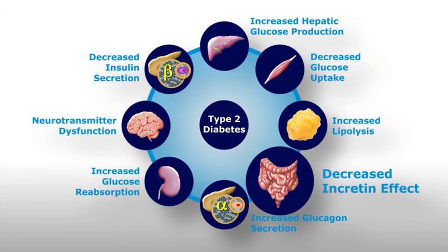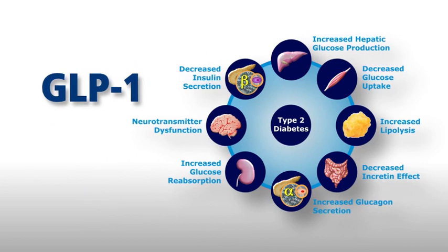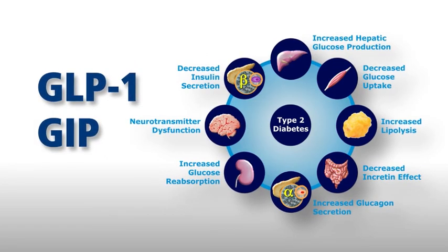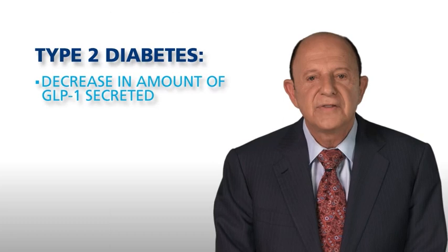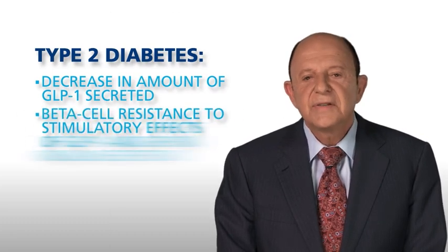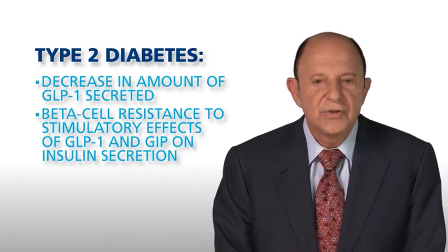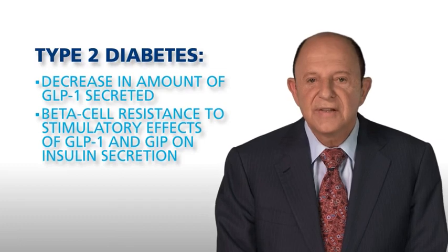We have come to recognize that the gut is a major endocrine organ. In response to food intake, the gut releases two very important incretin hormones: one is glucagon-like peptide 1, or GLP-1, and the other is glucose-dependent insulinotropic polypeptide, referred to as GIP. These two incretin hormones are responsible for about 70% of the insulin that is secreted in people without diabetes in response to a typical meal. We know that in patients with type 2 diabetes, there is a modest decrease in the amount of GLP-1 that is secreted, and more importantly, the beta cells are severely resistant to the stimulatory effects of GLP-1 and GIP, thus reducing insulin secretion.